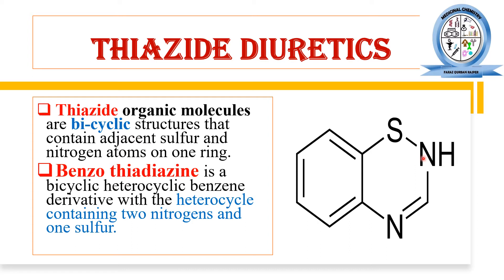The main key point of the thiazide ring nucleus is that the heterocyclic ring has two nitrogen atoms and one sulfur atom, and the nitrogen and sulfur are both adjacent to one another.